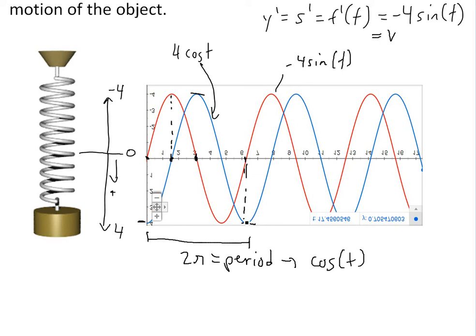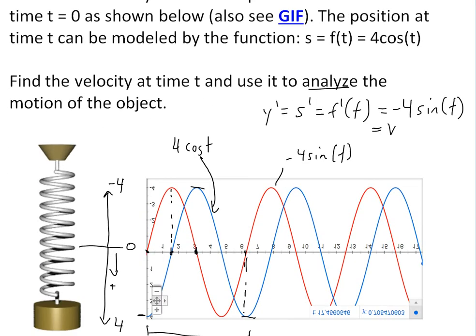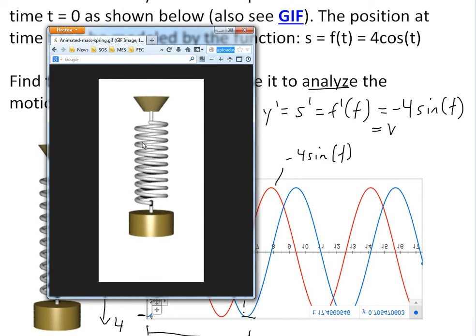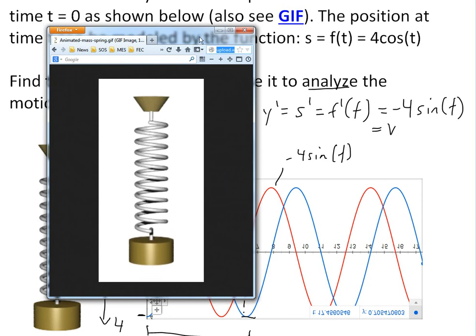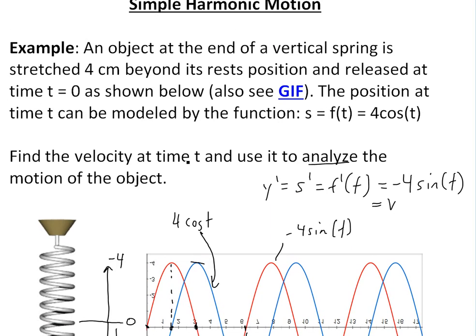You can see more on this in the video link below. Anyways, that's all for today. I just wanted to show how the simple harmonic motion of this going up and down can be modeled with trigonometry and the derivative. You can find out the motion and the velocity of it.